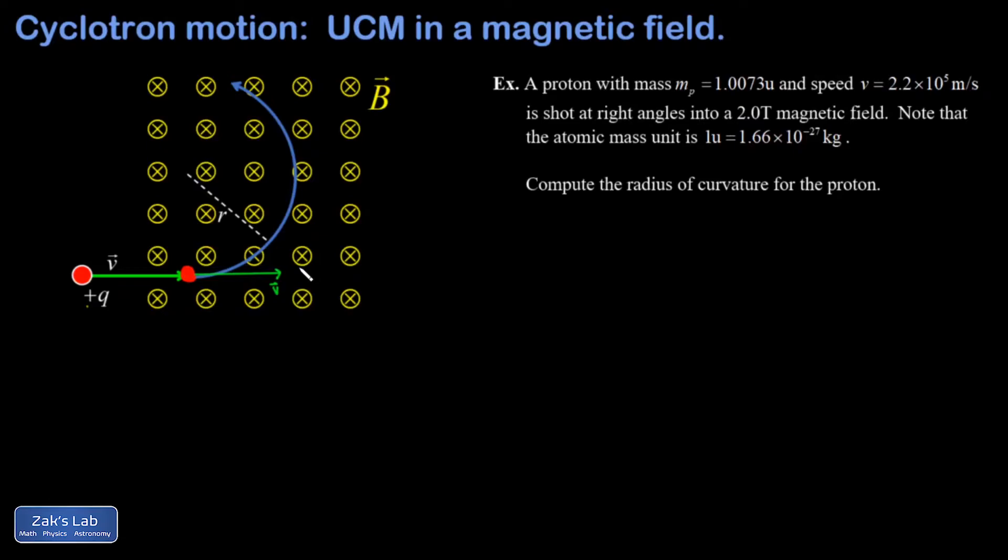We can find the direction of the magnetic force on this particle by pointing our fingers in the direction of v, and then sweeping out to the direction of B, and your thumb will point in the direction of the magnetic force. So that looks something like this. I see that my thumb is pointing up, so the magnetic force is upward here. I'll call that Fb.